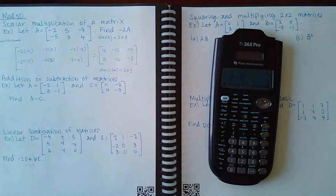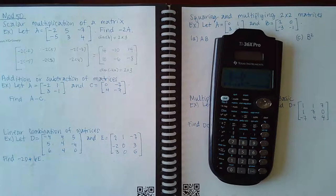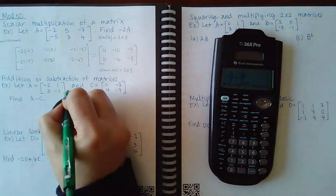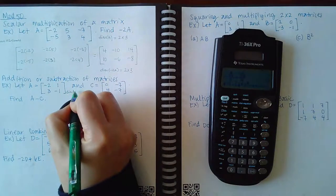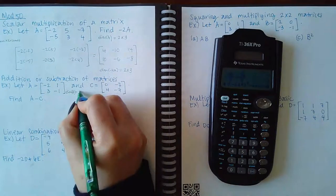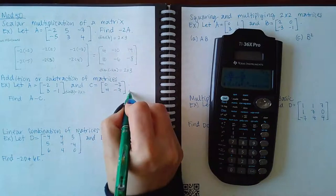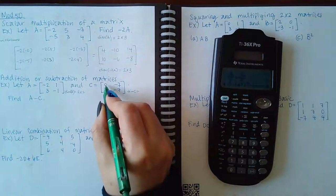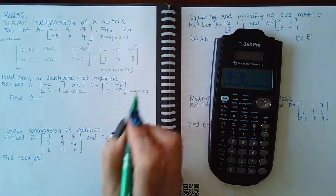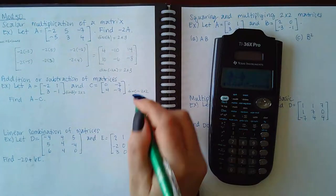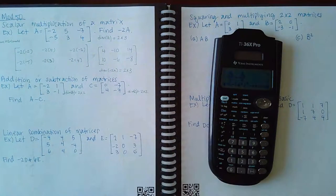For subtraction, you're adding or subtracting matrices from or to one another. The only way you can do it is if both matrices have the same dimensions. The dimensions of A are two by two, and the dimensions of C are also two by two, so they do have the same dimensions, which allows me to subtract them.